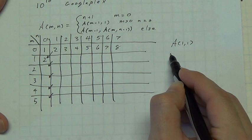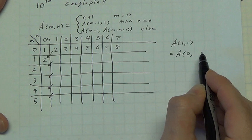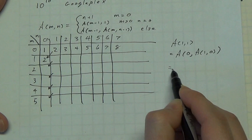Ackermann, 1, 1. A, 1, 1. That's equal to A, 0, A, 1, 0. Okay,